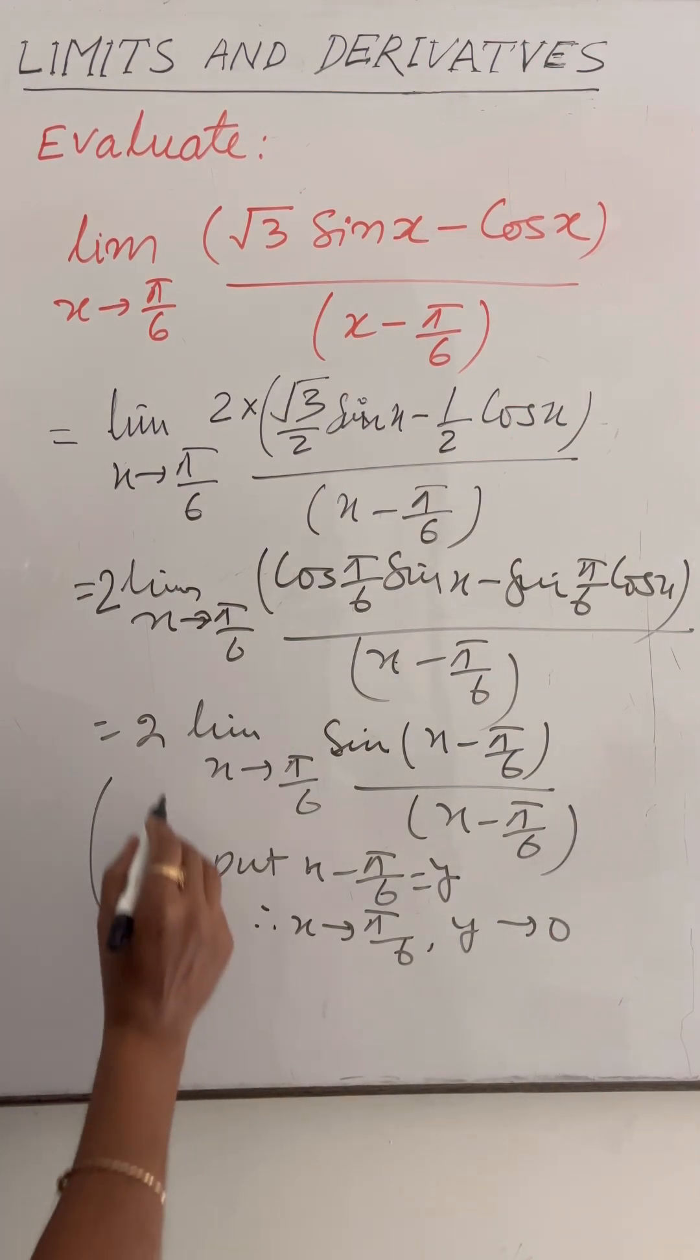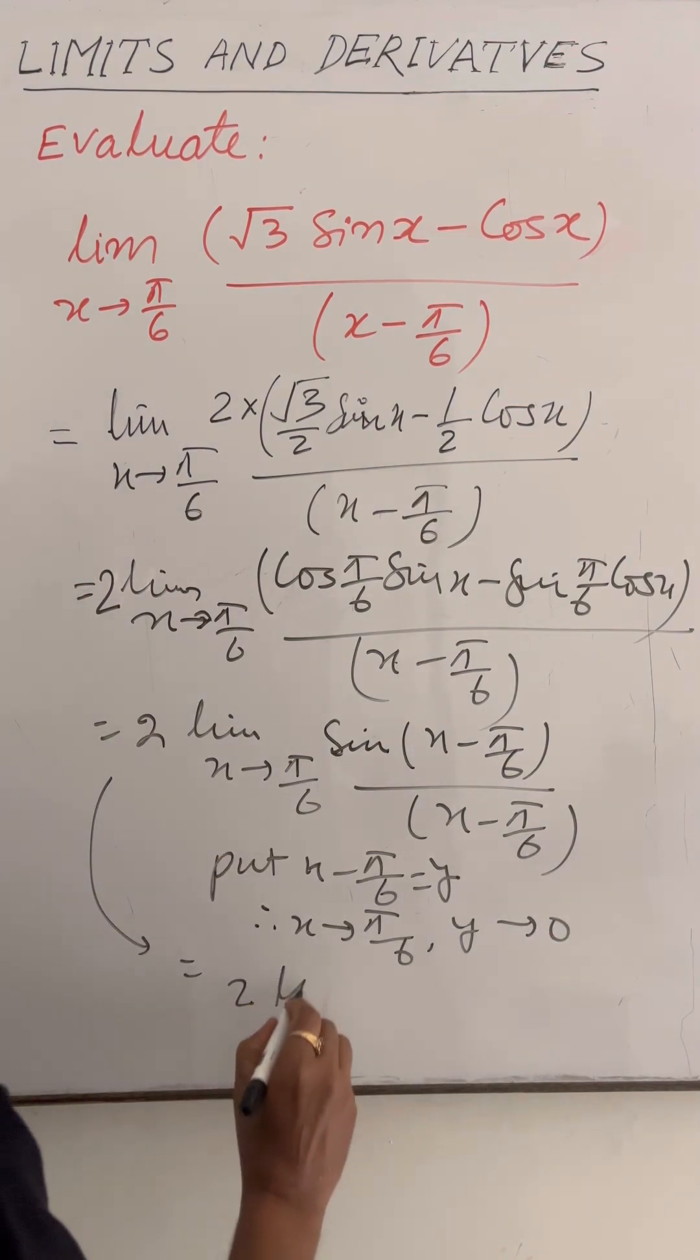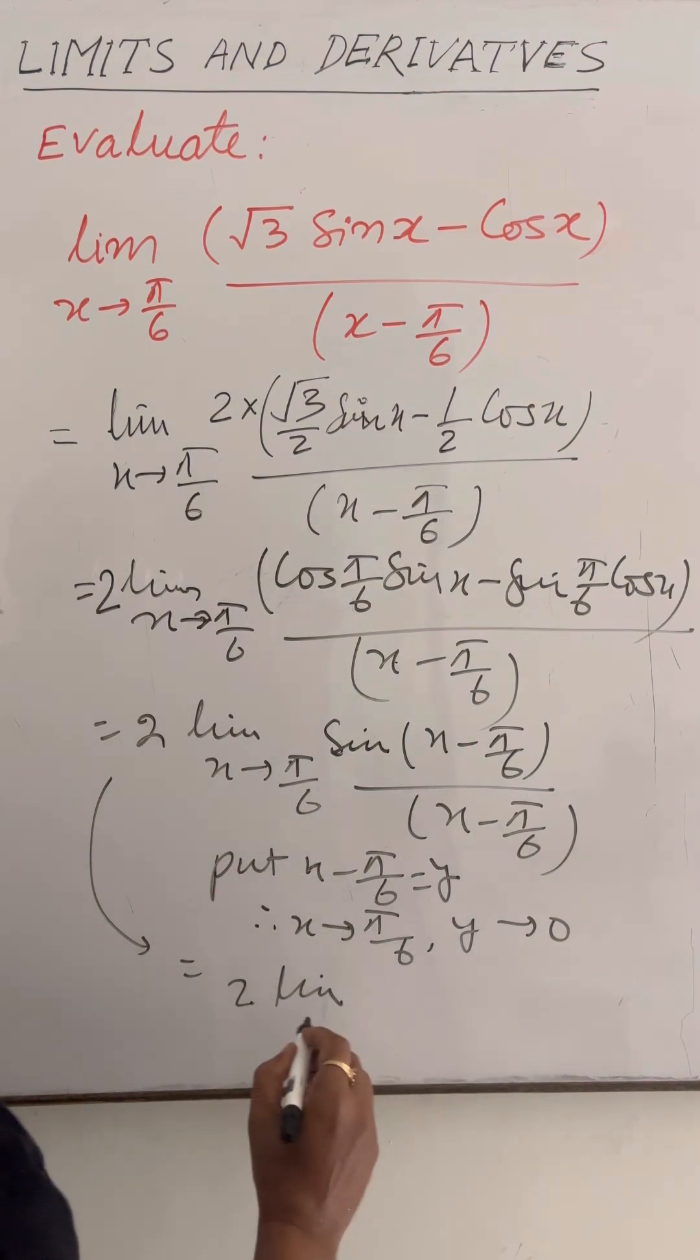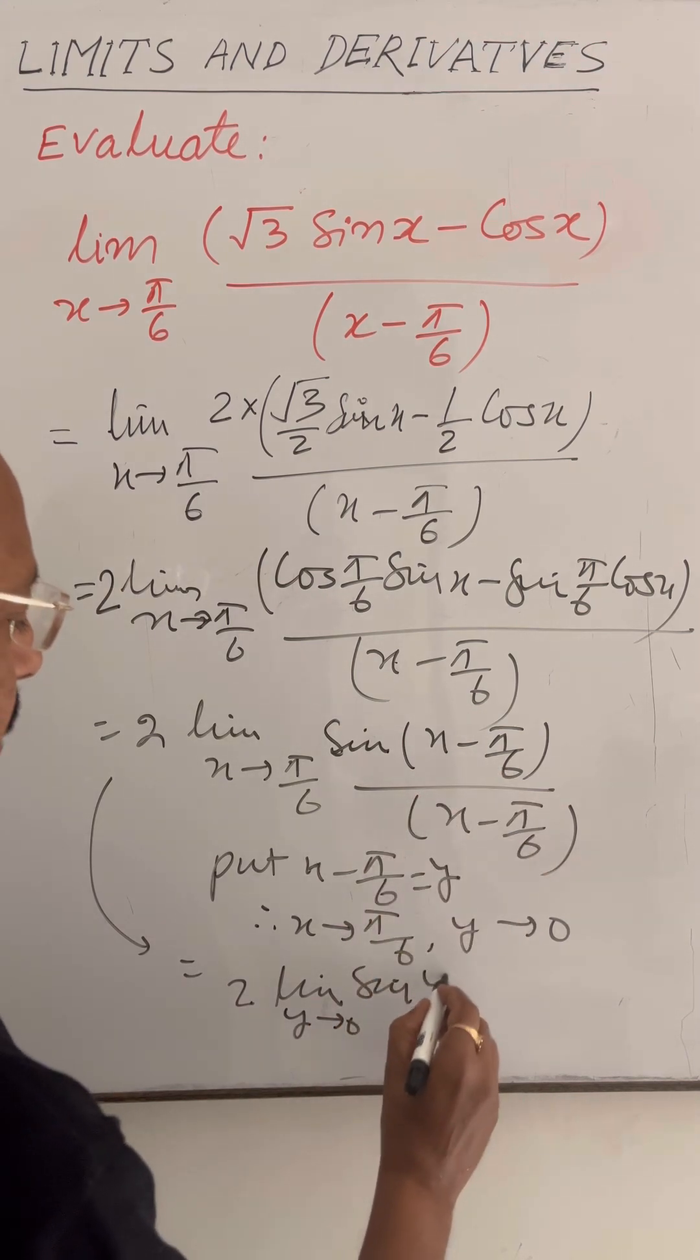So this limit can be written as 2 times limit, in place of x π by 6 we can write y tends to 0, and here sin y upon y.